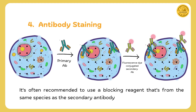Antibody staining is where the magic happens. First, we introduce primary antibodies that specifically bind to our target proteins. Then, we add secondary antibodies that bind to the primary ones. These secondary antibodies are often tagged with fluorescent dyes or enzymes, making them detectable under a microscope.